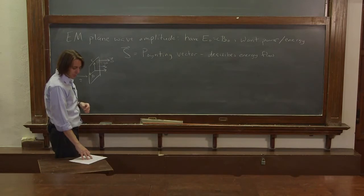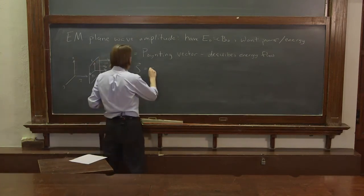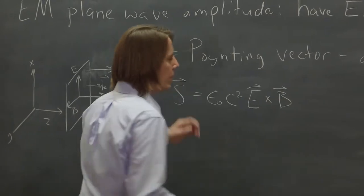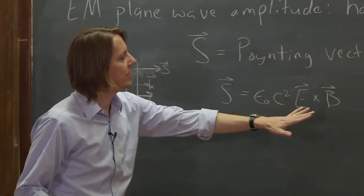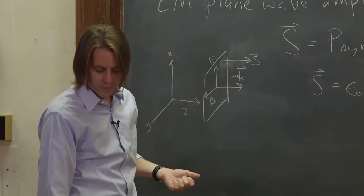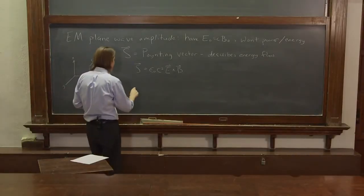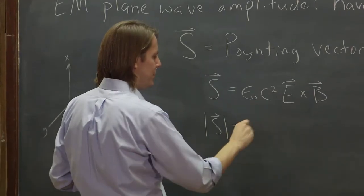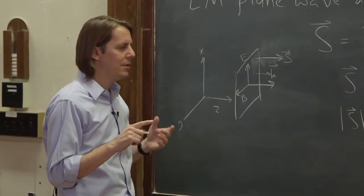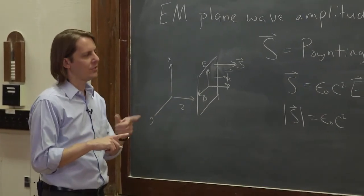What John Henry Poynting pointed out is that you want to define S as epsilon naught c squared times E cross B. We know it goes along the K vector because it's E cross B, and from the right-hand rule E cross B always points along K. For the magnitude, the cross product of E and B is the magnitude of E times the magnitude of B times the sine of the angle between them. Since E and B are always 90 degrees apart — always perpendicular — that sine is always 1.